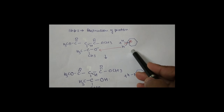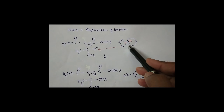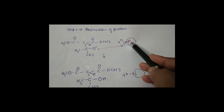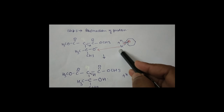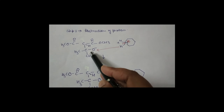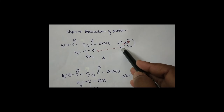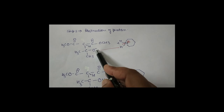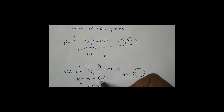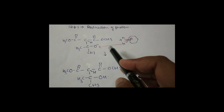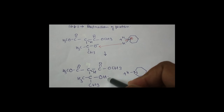In the third step, abstraction of a proton from protonated piperidine occurs. In the first step, piperidine had gained a proton and acquired a positive charge. Now, the oxygen anion takes one of the protons from piperidine, converting into a hydroxyl group, while piperidine is regenerated.